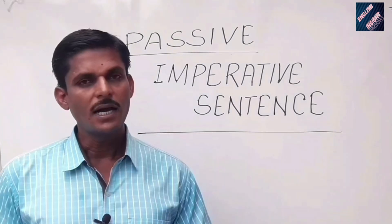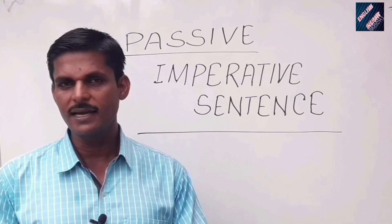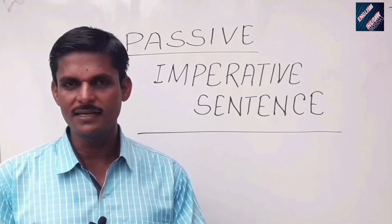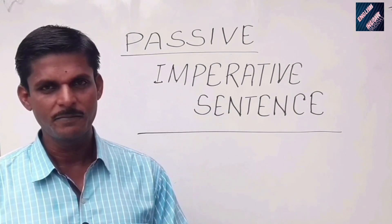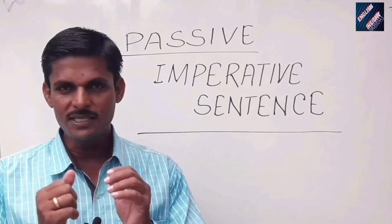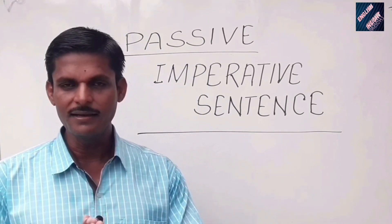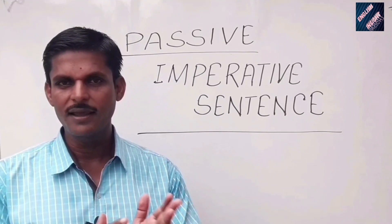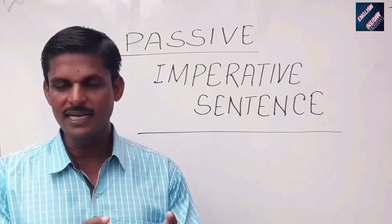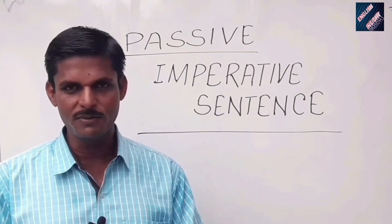I would like to tell you one thing. Just as all declarative sentences are not in passive voice, all imperative sentences are also not in passive voice. The reason is very simple: there must be a transitive verb in the sentence. Then the sentence can be called active voice. If it's an active voice, the sentence can be made passive. If it's not an active voice, it cannot be passive.